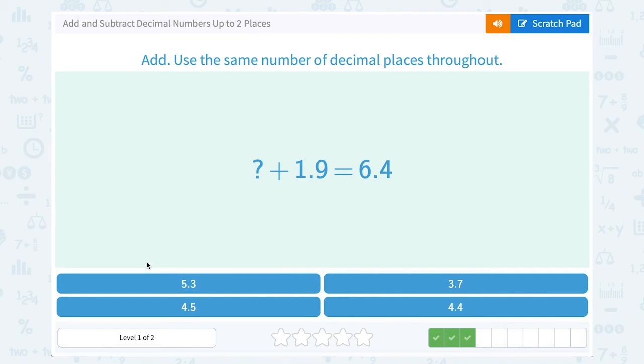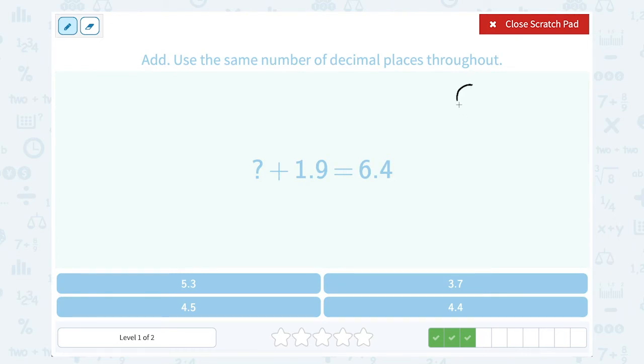What number plus 1.9 is equal to 6.4? Let's subtract. 6.4 minus the one number we know of 1.9 should tell me what was left for the second number that they added. Lining up the decimal points, I'm going to have to borrow from the ones place. And now I can think of that as 14 minus 9, which gives me 5. 5 minus 1 in the ones place leaves me with 4. So 4.5.